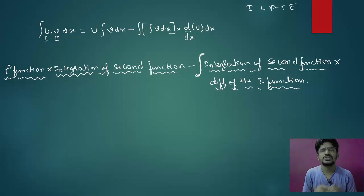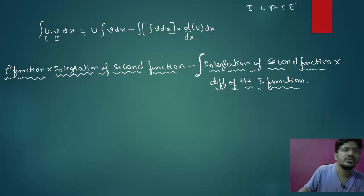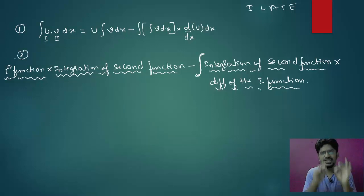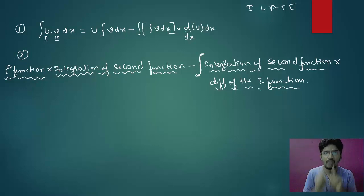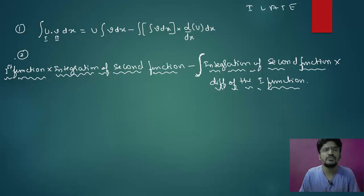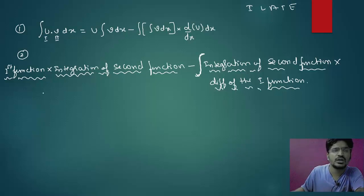So this is what integration by parts gives you. Either remember the formula, or remember this technique: first function as it is, integrate the second function, minus the integral symbol, then write the integration of the second function multiplied with the differentiation of the first function.